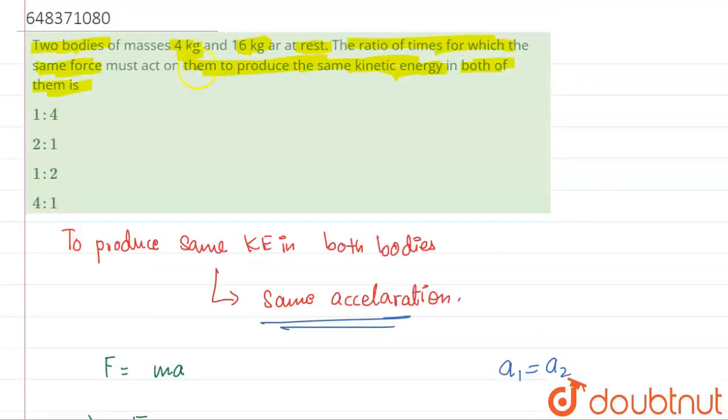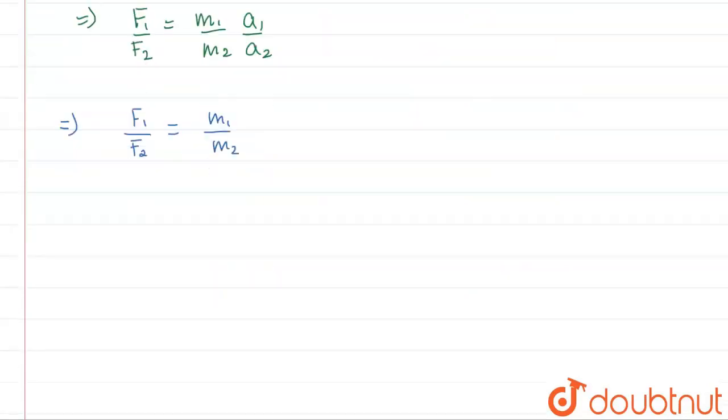What is mass 1? Mass 1 is 4, mass 2 is 16. So what we will have, we will have 4 upon 16, so this will come out to be 1 by 4. Or you can say 1 is to 4. So the forces are in the ratio of 1 is to 4.